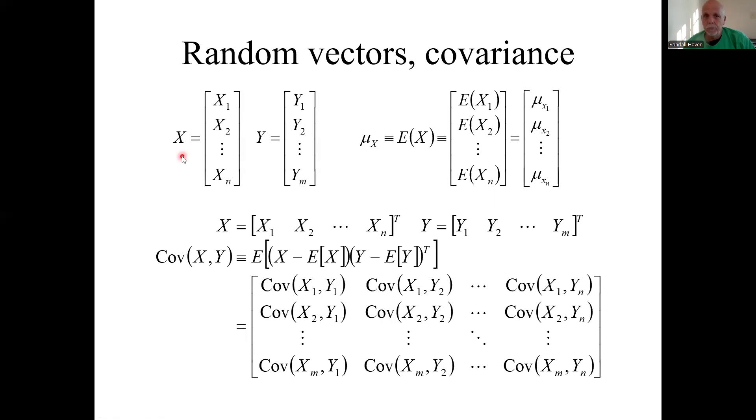A random vector is just a vector of random variables. The standard is a column vector, and they would look like this. X might have n random variables, the other random vector might have m random variables. The mean of a random vector or the expected value of a random vector.